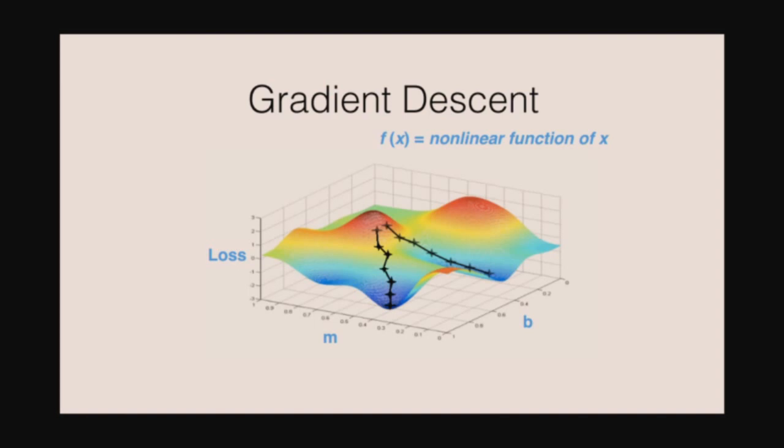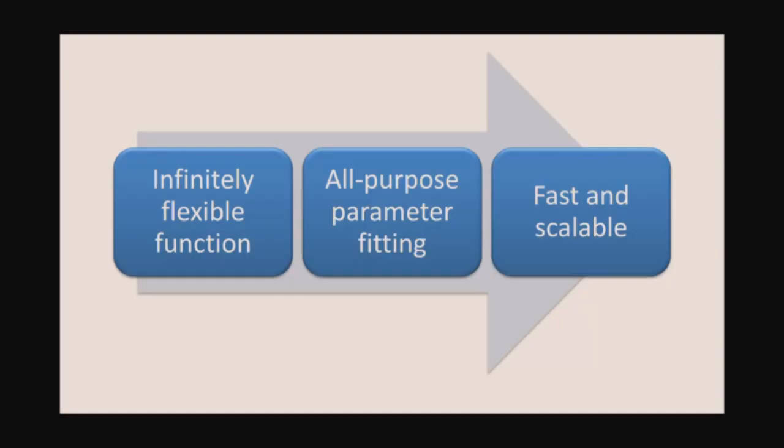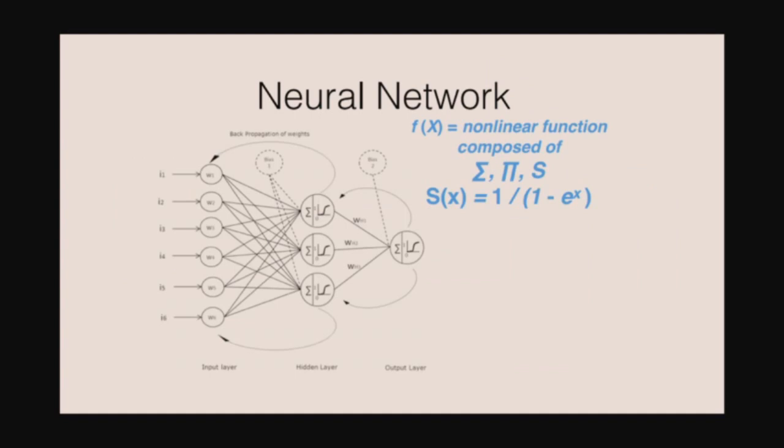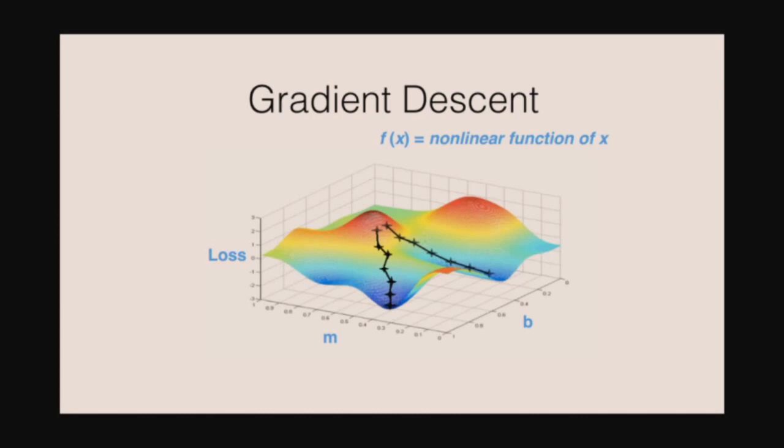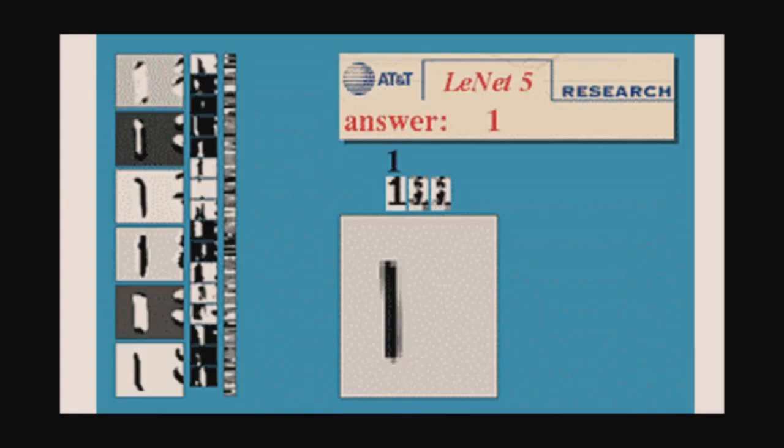In the 90s, that didn't quite work out as people hoped. Really, the problem was the third box — the fast and scalable piece. It turned out that neural networks trained with gradient descent couldn't solve the most challenging real-world problems in any reasonable amount of time or space.